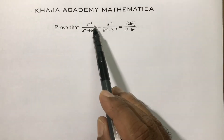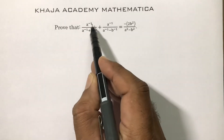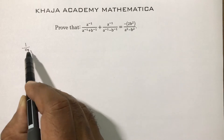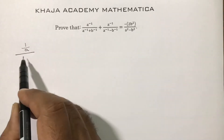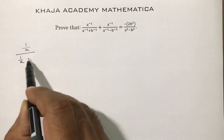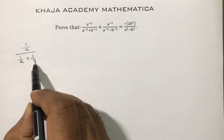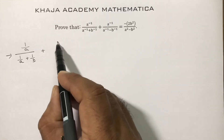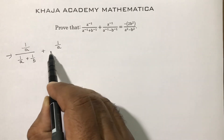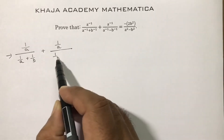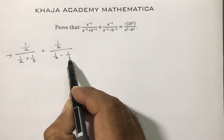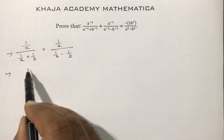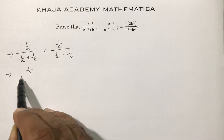So a⁻¹ you can write as 1/a. Here we have 1/a divided by (1/a + 1/b), plus 1/a divided by (1/a − 1/b).